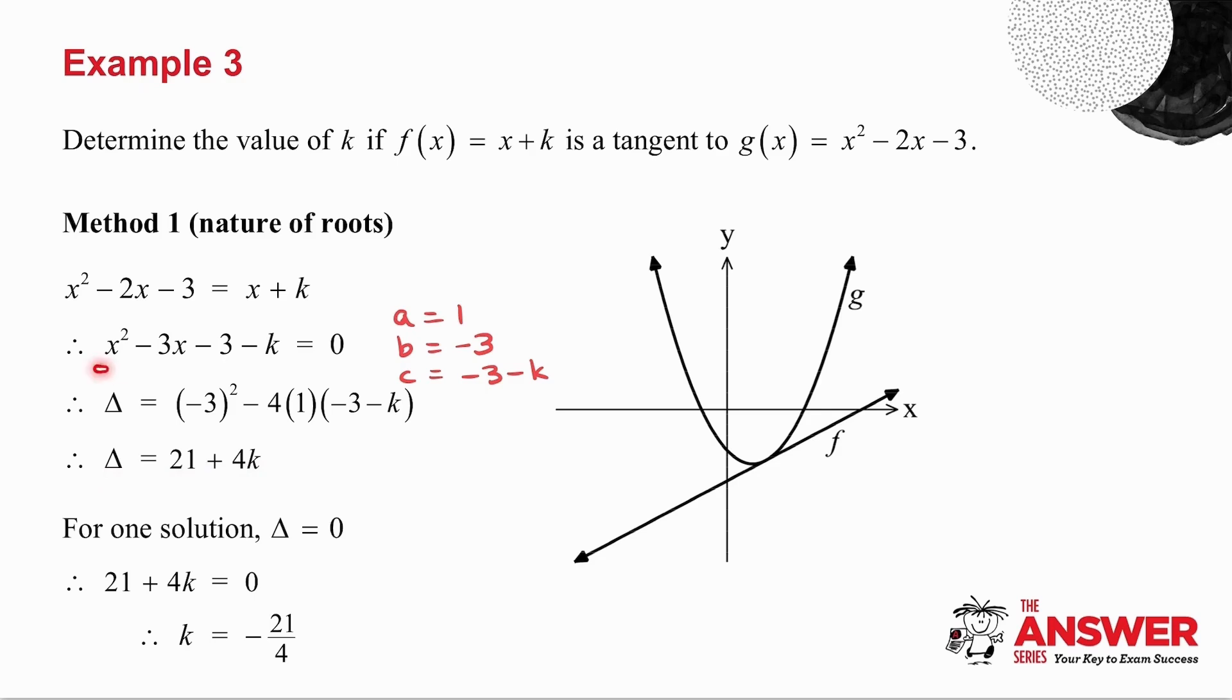Now a quadratic equation has two solutions. However, for these two graphs to be tangents to each other, I can only get one solution. How do I get one solution from a quadratic equation? Well, the only way I can get one solution is if the roots are equal. And if the roots are equal, what do I know? I know that delta is equal to zero. So what I do is I take delta, which I've just worked out, and I make it equal to zero, and I get my value for k. So there I've worked out k using nature of roots.